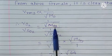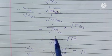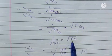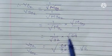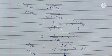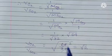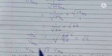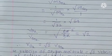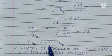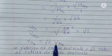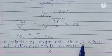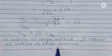This equals 1 upon root of 32 times root of 64, which we can write as root of 64 upon 32. V of O2 upon V of SO2 equals root of 2. Therefore V of O2 is equal to square root of 2 times V of SO2. That is, velocity of oxygen molecule is root 2 times the velocity of sulfur dioxide molecule.